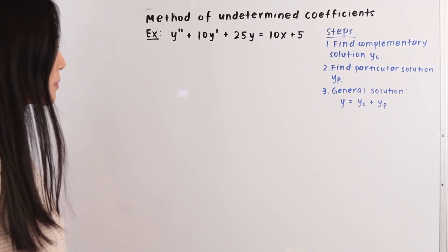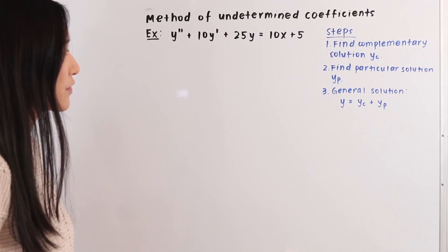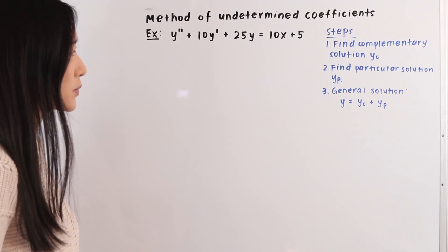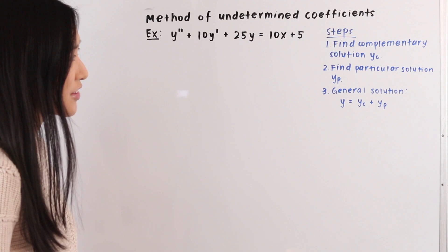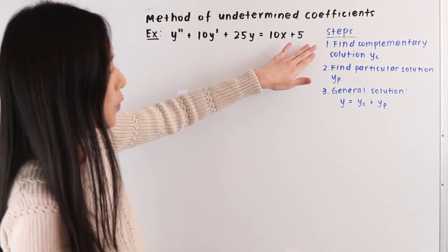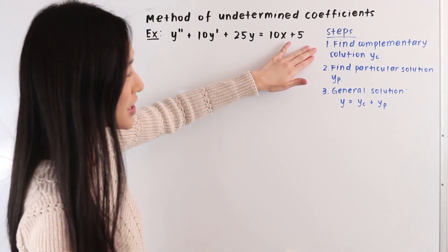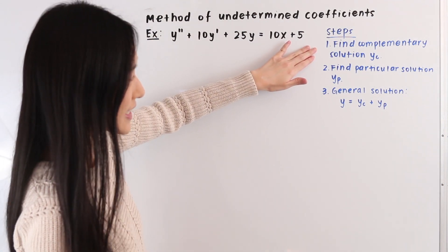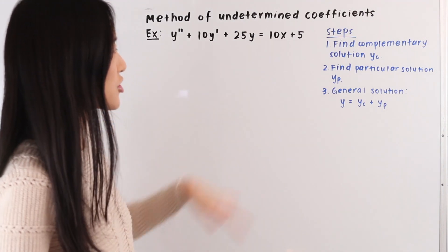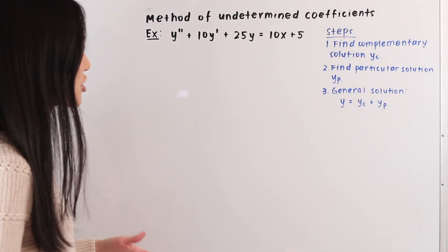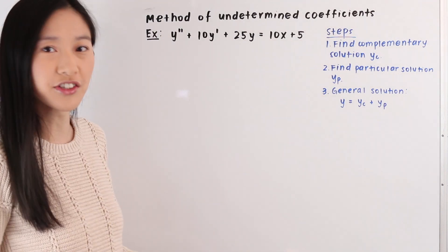So we have y double prime plus 10y prime plus 25y is equal to 10x plus 5. For our first step we're going to start out by finding our complementary solution yc, and our complementary solution is just the solution to the homogeneous version of our differential equation.